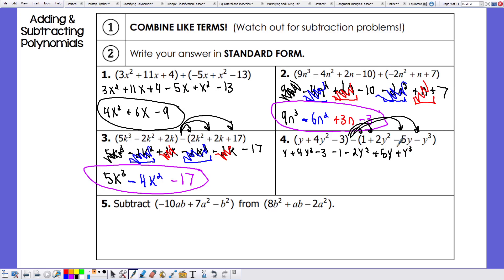Now, highest exponents to the third power, so y to the third. Cancel that out. Then we want our y squares: 4y squared and negative 2y squared, giving us a positive 2y squared. Cancel those out safely. Then we have y and 5y to get us a positive 6y. Then finally, a negative 3 minus 1, which is negative 4, giving us our answer.